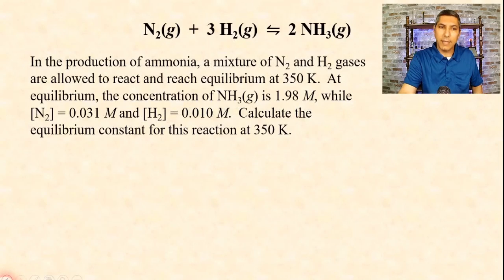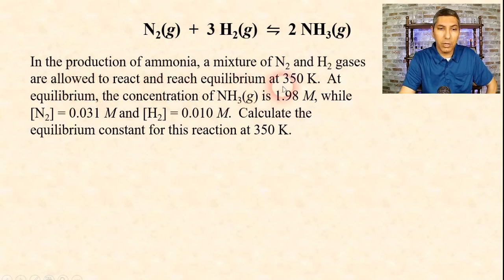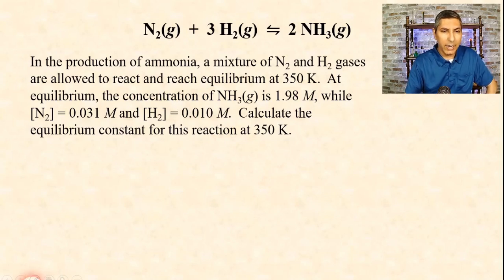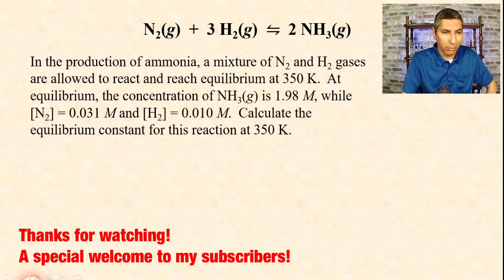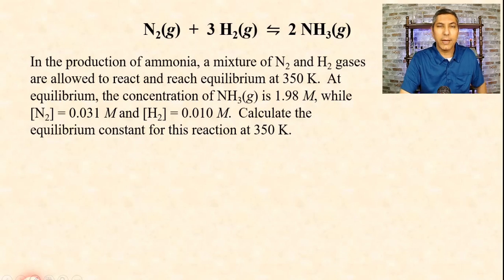Now let's try an example. We have the same equation from the last video. In the production of ammonia, NH3, a mixture of N2 and H2 gases are allowed to react and reach equilibrium at 350 kelvins. At equilibrium, the concentration of NH3 gas is 1.98 molar, N2 concentration equals 0.031 molar, and H2 concentration is 0.010 molar. Calculate the equilibrium constant for this reaction at 350 kelvins.